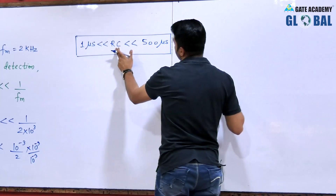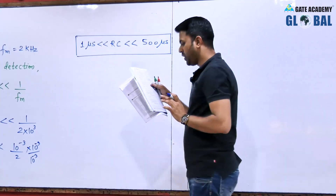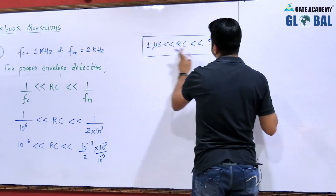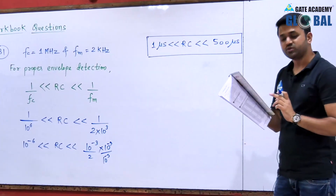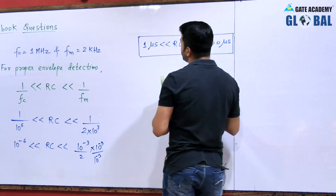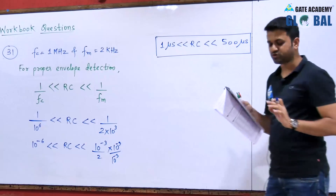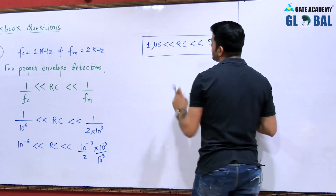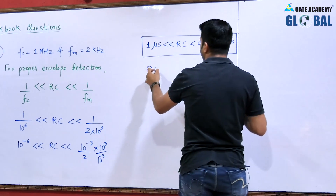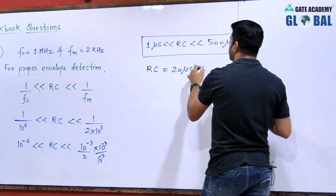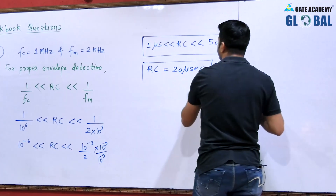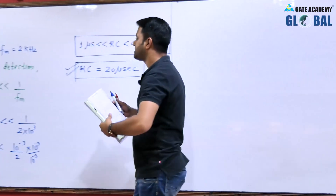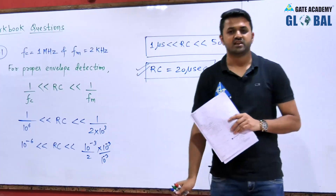According to the condition, RC should be much less than 500 microseconds, so option A (500 μs) cannot be correct. Option B is 20 microseconds, which is in the range of 1 microsecond to 500 microseconds, so this can be the correct answer. Option C is 0.2 microseconds, which is less than 1 microsecond, so it is not possible. Option D is 1 microsecond, but RC should be much greater than 1 microsecond. So the correct answer is 20 microseconds — if we select 20 microseconds, we will demodulate the signal without any distortion.